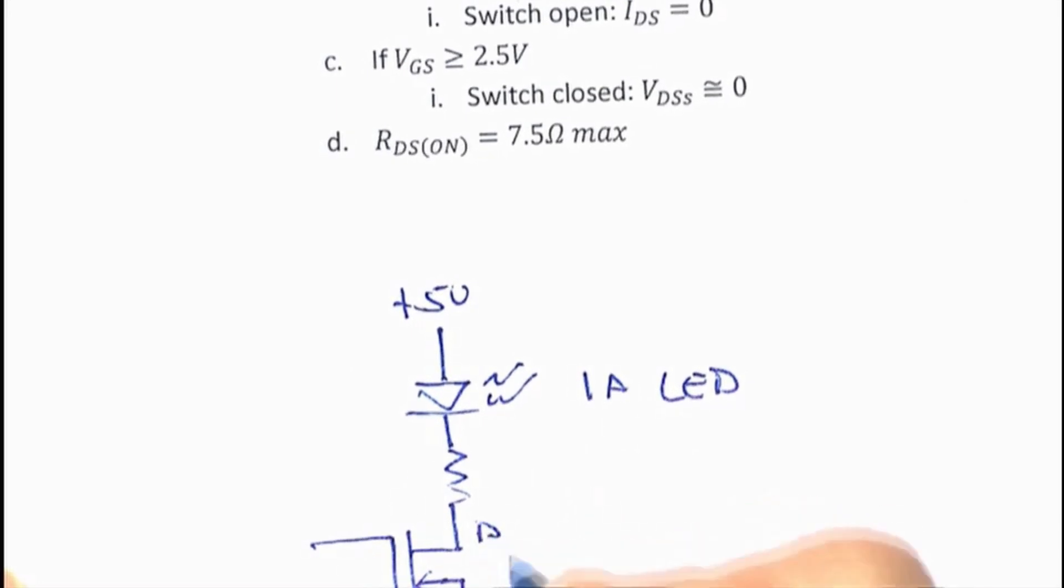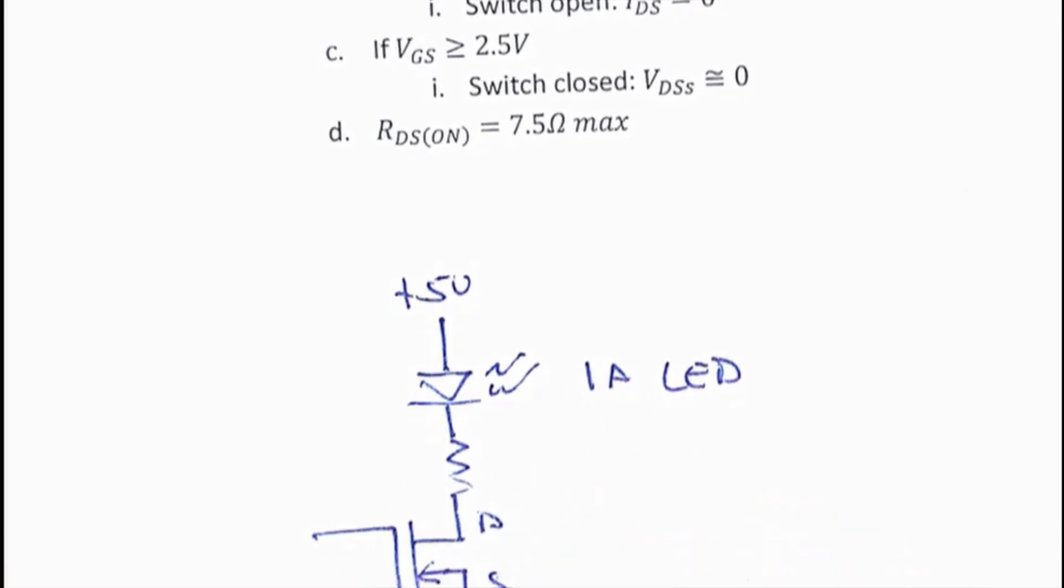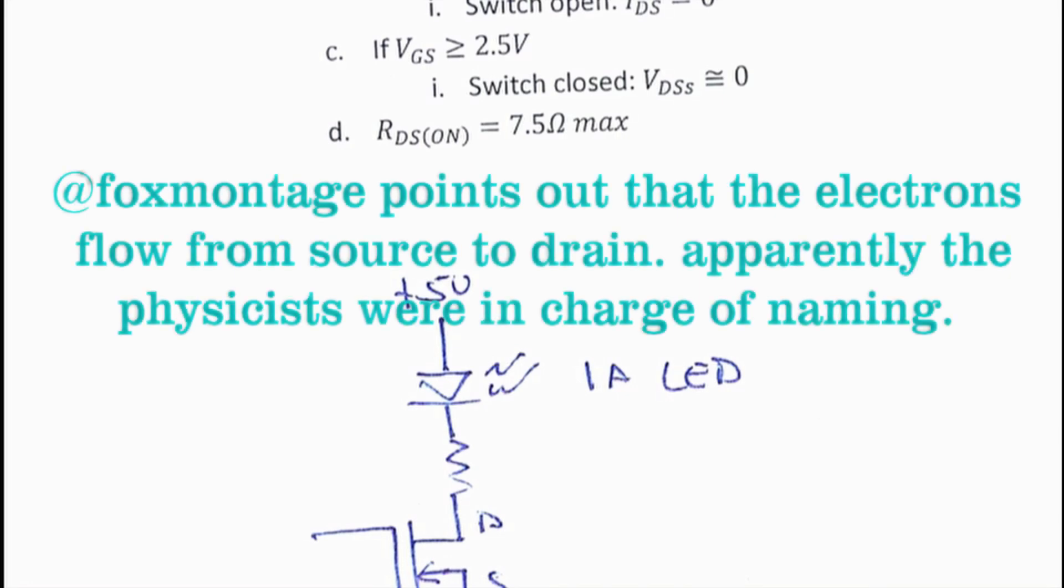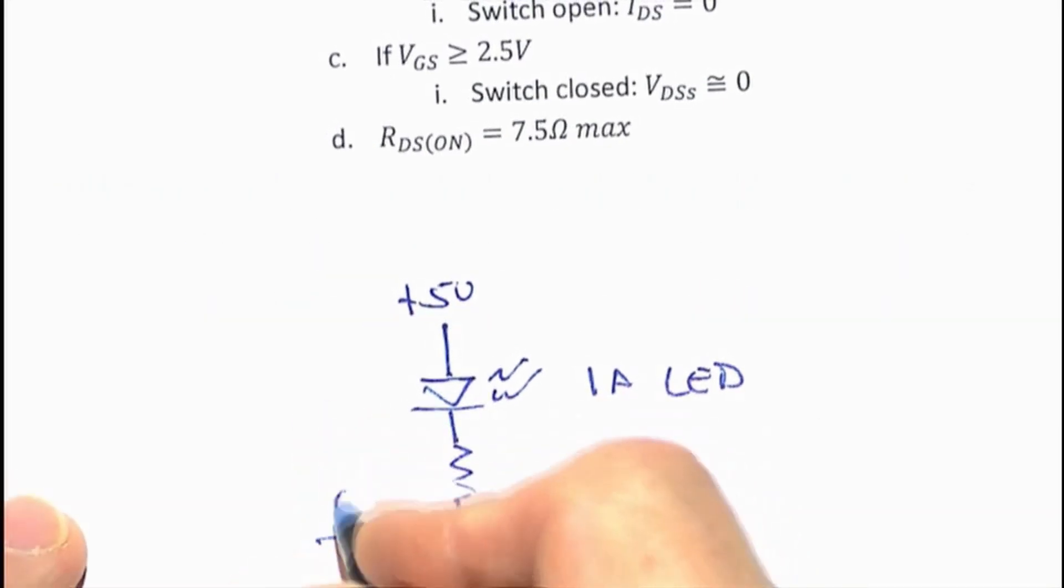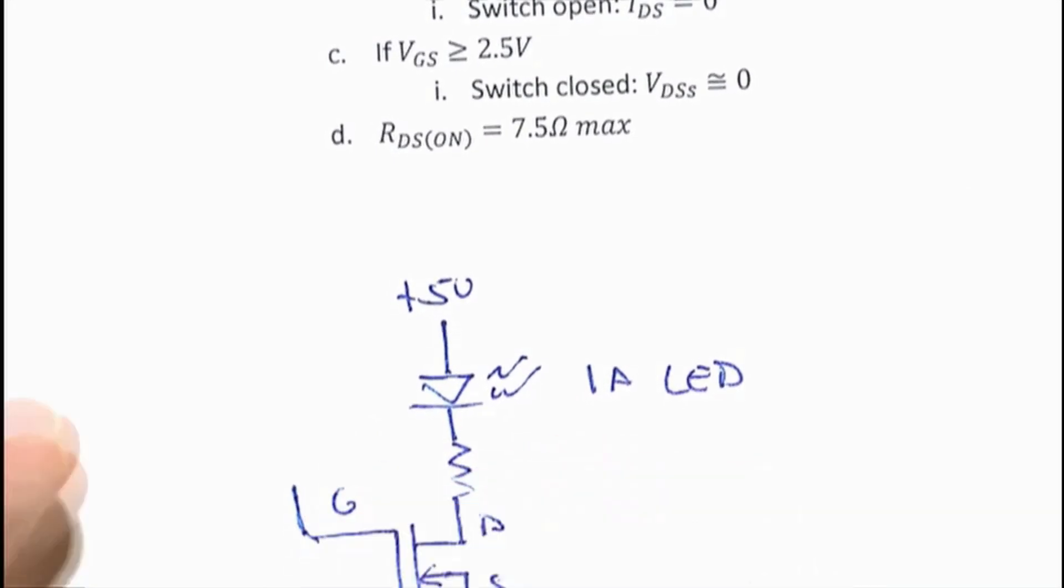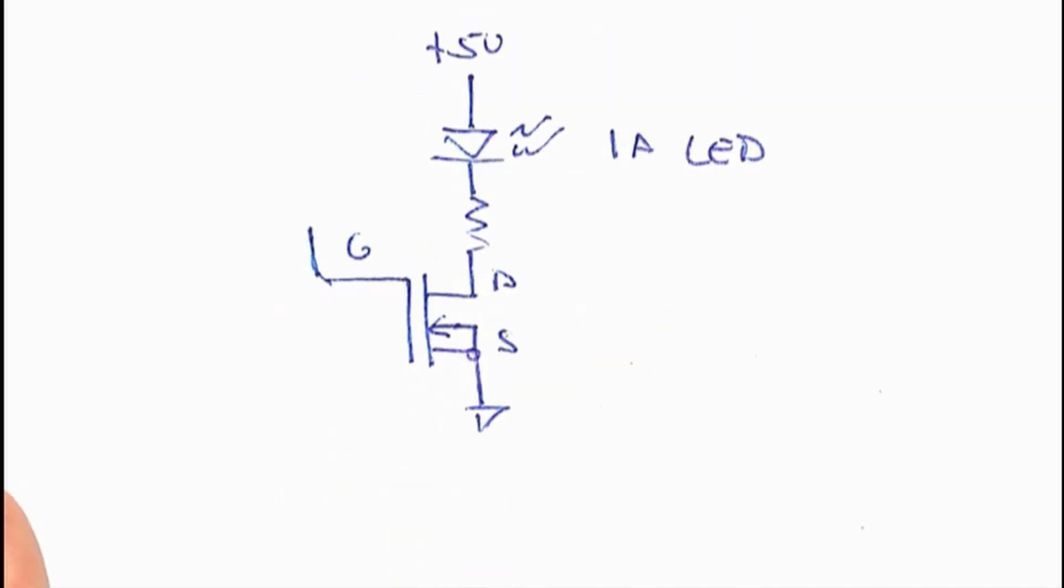So here's my drain, here's my source. I know it sounds wrong that current flows from drain to source. I have no idea why they named it that way. And here's my gate. My gate is sticking up in the air. You can't see it, but back here I've just bent the gate up. Let's move that up so you can see the whole thing.